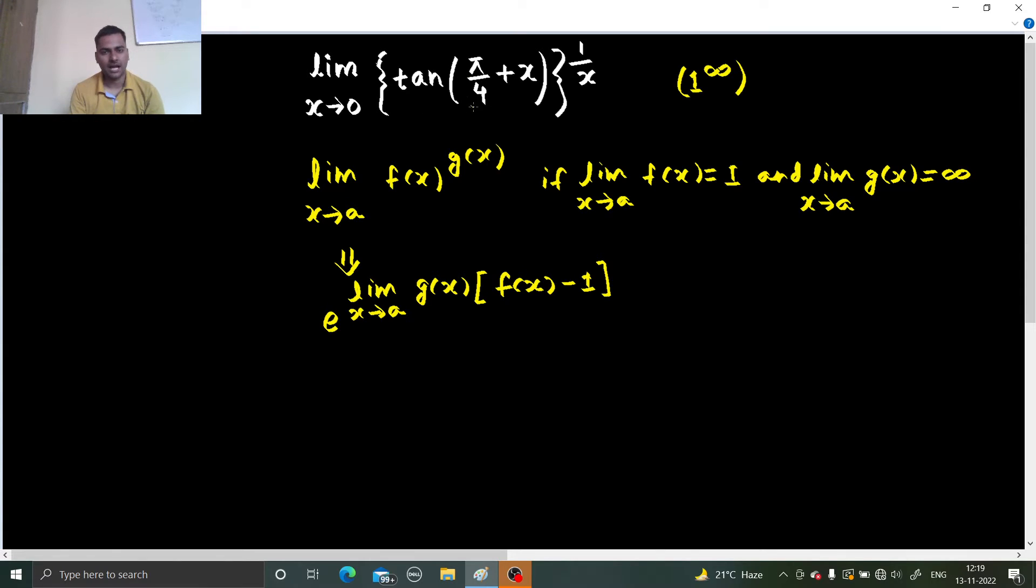We know how to find tan(A + B) because tan of A plus B is tan A plus tan B divided by 1 minus tan A tan B.